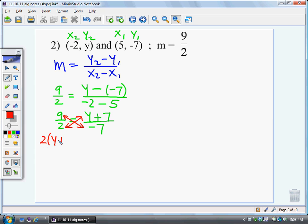I'd have 2, and I'd have to multiply that by y plus 7. I need parentheses since there's two terms. And I would have 9 times negative 7. This would be 2y plus 14, and this would be negative 63. Now, if I just solve it, 2y would be equal to negative 77, and y would be equal to negative 38 and a half.